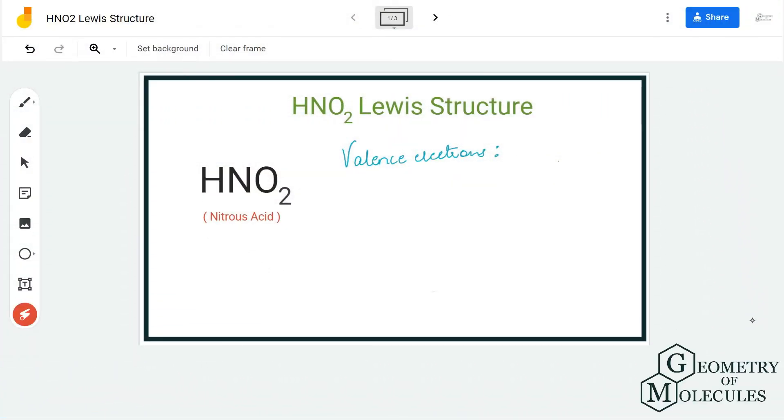Hi guys, welcome back to our channel. In today's video we are going to look at the Lewis structure for HNO2, the chemical formula for nitrous acid. To determine its Lewis structure, we are first going to look at the total number of valence electrons for this compound.